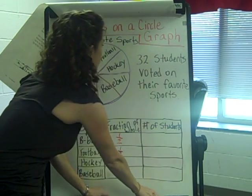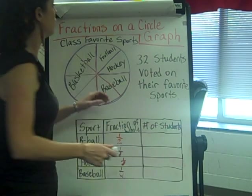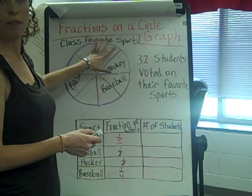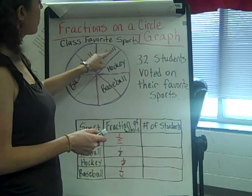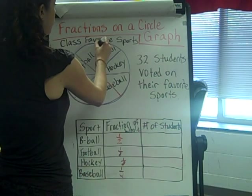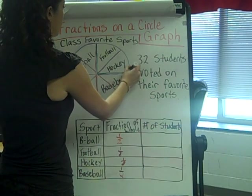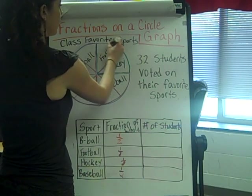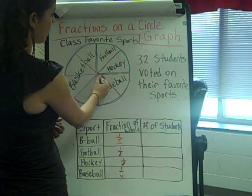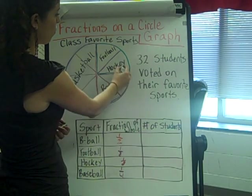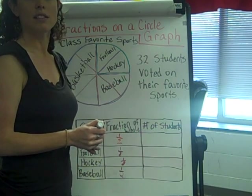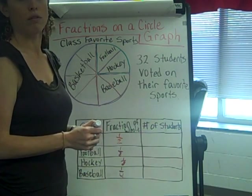What I can also note: if I take my one eighth for football and one eighth for hockey and put them together, one eighth plus one eighth is two eighths, which is the same size as one fourth. So two eighths equals one fourth.